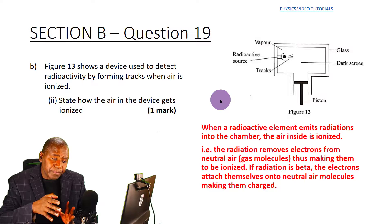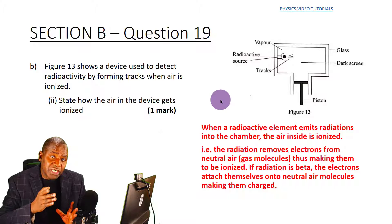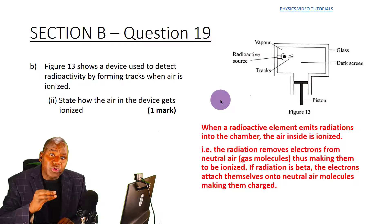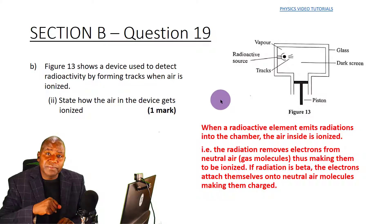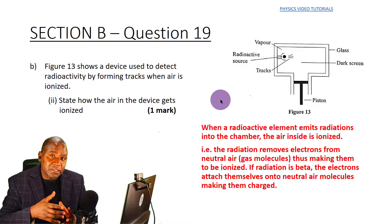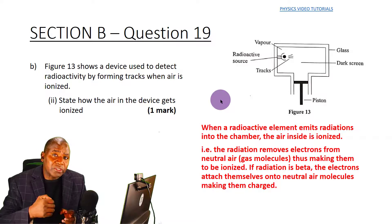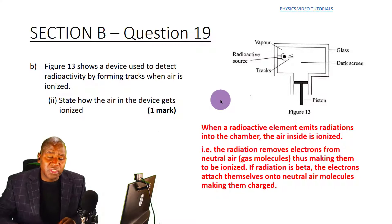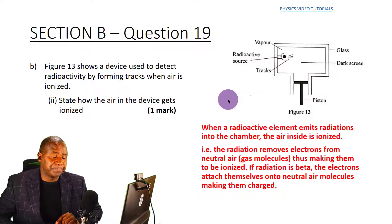If the radiation is a beta particle, the electron — which is the beta particle — attaches itself onto a neutral air molecule, making it negatively charged. For other radiations such as alpha particles, the alpha particles rip electrons from neutral air molecules, making them positively charged. That is how the air gets ionized.